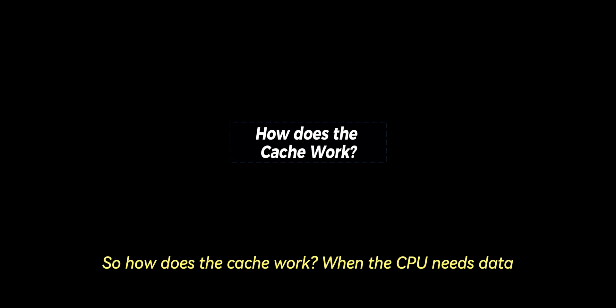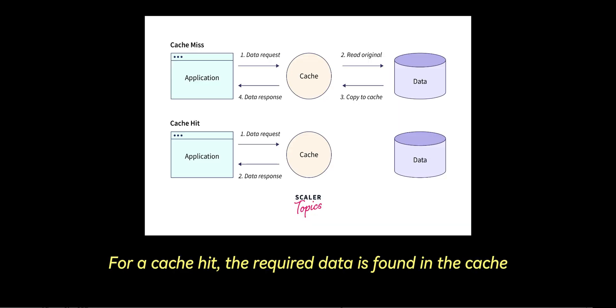So how does the cache work? When the CPU needs data, it first checks if the data is in one of the cache levels. For a cache hit, the required data is found in the cache and it is quickly returned to the CPU. This happens in a few clock cycles.